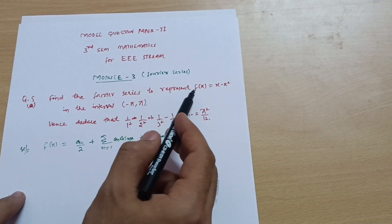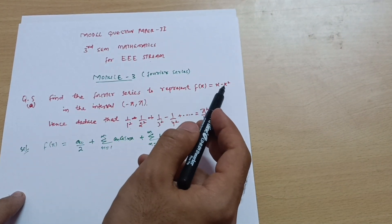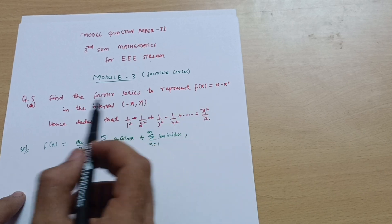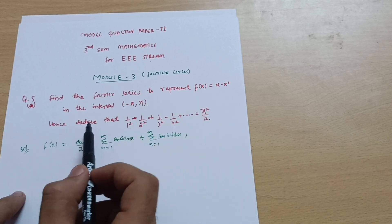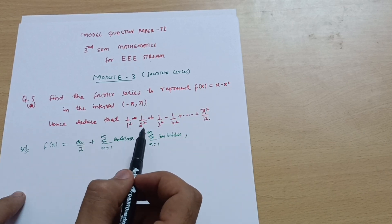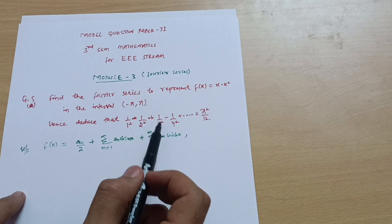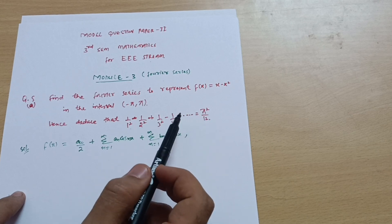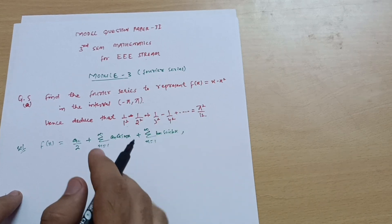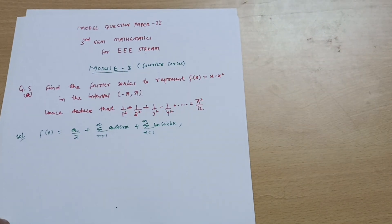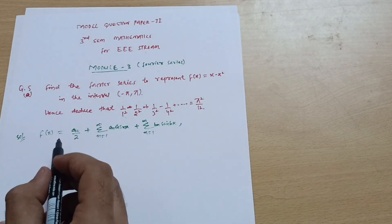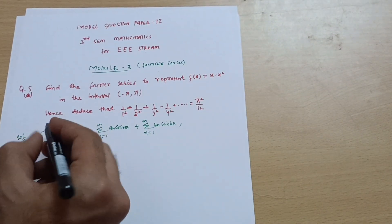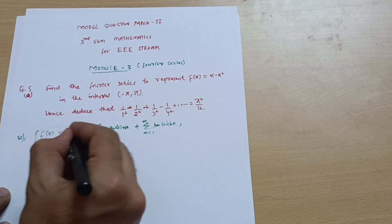Find the Fourier series to represent f(x) = x − x² on the interval −π to π. Hence deduce that 1/1² − 1/2² + 1/3² − 1/4² + ... = π²/12. You have to show this particular equation at the last.